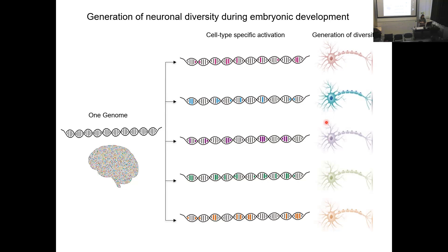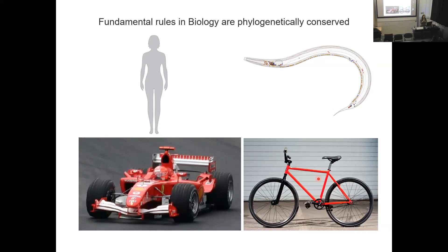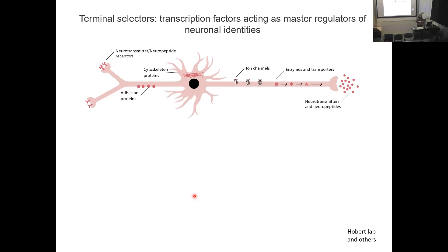In my lab, we want to better understand how the non-coding regulatory genome is decoded in the generation of different neuron types. To address this complex question, we use a simple model organism: C. elegans. C. elegans has an invariable development that gives rise to 302 neurons in the hermaphrodite — much less than in the human brain — but already with such a small number, you can find more than 100 different neural types. Also, the non-coding regulatory genome is 50 times smaller in C. elegans compared to humans.